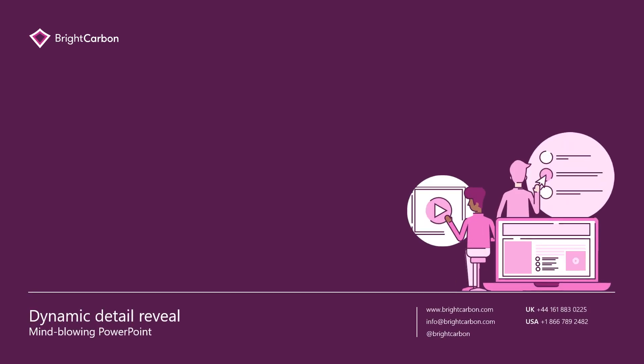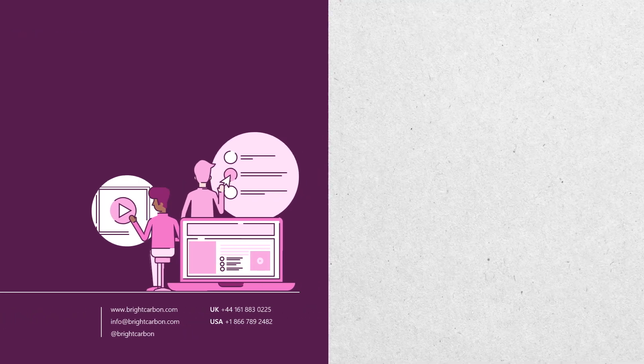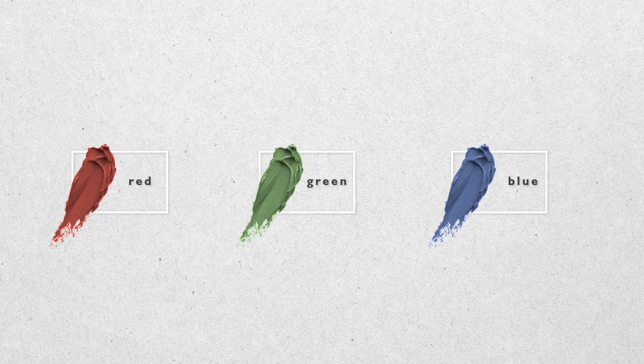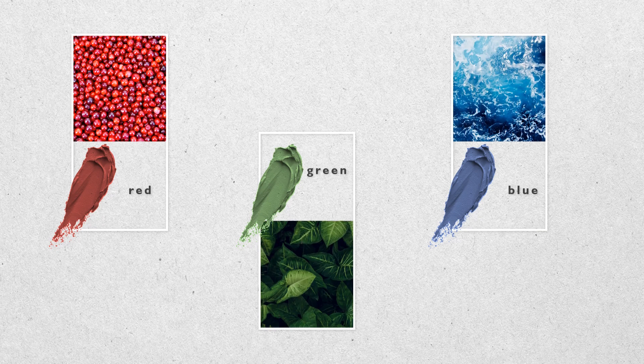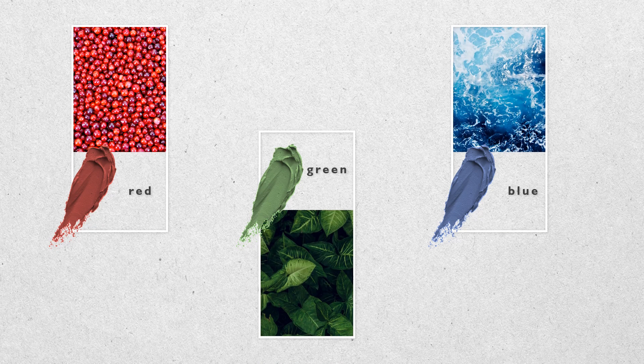Morph can be a useful tool to highlight content in a much more interesting and dynamic way than usual. For example, here's a set of three simple elements, but by using Morph you can expand each element and bring in more detail.